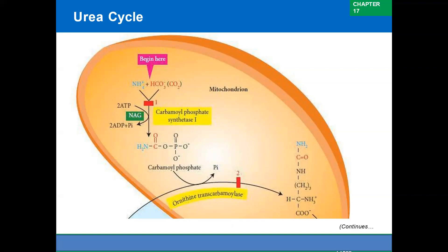Regarding removal of urea from the body: urea produced in the liver is transported in the blood to the kidney from where it is excreted. In renal failure, increased levels of urea in the blood diffuse into the intestine where it is broken down into ammonia, which is absorbed into the blood. This is the underlying mechanism of hyperammonemia — that is, elevated ammonia levels in blood, commonly seen in patients with renal failure.